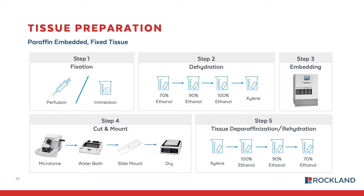The choice of fixation type can be dependent on many factors, including the specific organ type being harvested, time constraints, the host of the tissue specimen, or even the availability of equipment. Since this tissue prep method involves embedding your tissue in paraffin, the next step in the workflow is dehydration. This step is needed because water within the tissue sample is immiscible with paraffin — they do not mix together. This is achieved by slowly increasing the percentage of alcohol, from 70 to 90 to 100 percent, and then into a non-polar solvent such as xylene.